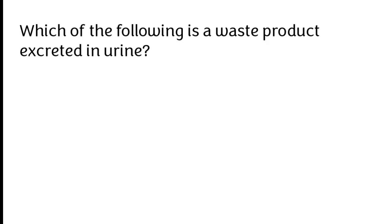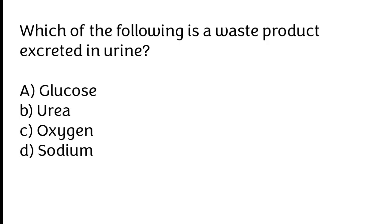Which of the following is a waste product excreted in urine? A) Glucose, B) urea, C) oxygen, D) sodium.